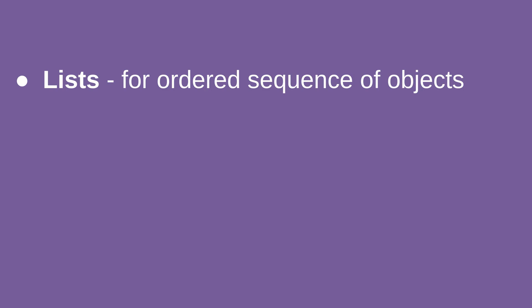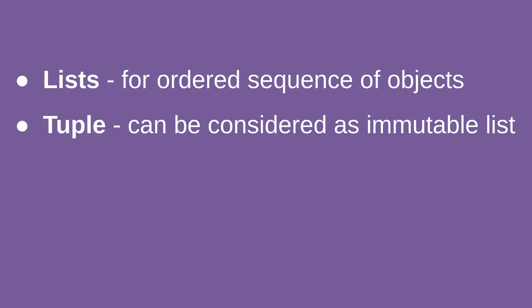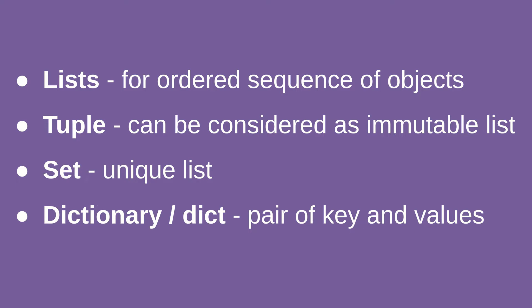Finally, let's compare tuples with dictionaries and lists. To remind ourselves: a list is an ordered sequence of objects; a tuple can be considered as an immutable list; a set is a unique list; and a dictionary is a pair of keys and values. It is really important to remember and distinguish all those built-in data types in Python.